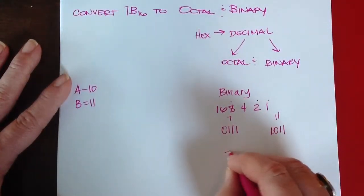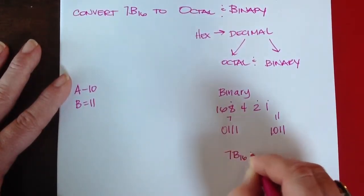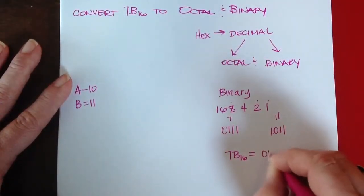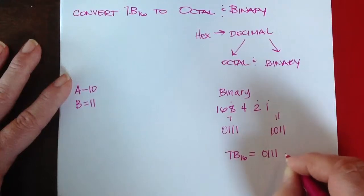So 7B16 is equal to 0, 1, 1, 1, 1, 1, 0, 1, 1, base 2.